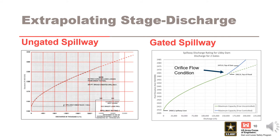The published stage discharge should always be checked. The curve will typically need to be extrapolated above the top of the dam to model potential overtopping events. Appropriate methods to calculate and extrapolate a stage discharge rating curve can be found in Engineer Manual 1110-2-1603 and EM 1110-2-1605. When extrapolating a stage discharge curve for a gated spillway, be sure to consider that the spillway gates will typically transition to an orifice flow condition above the design pool elevation, which limits the discharge capacity. Extrapolating the curve assuming free uncontrolled flow will typically overestimate the discharge, resulting in an unconservative stage frequency curve.